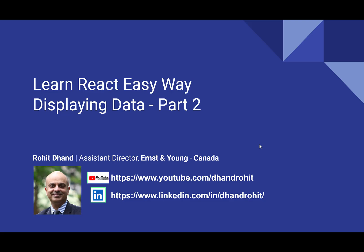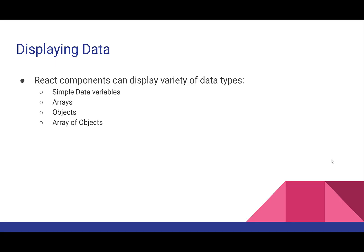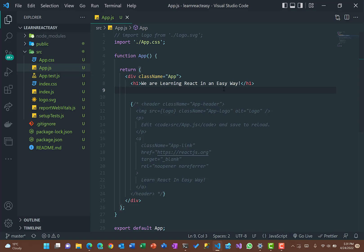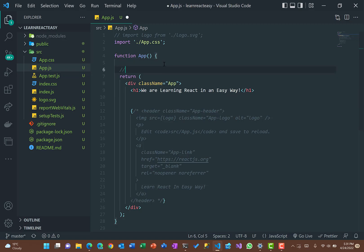This second part focuses on displaying data. Data is very important for any application — even for building websites where React components are used. We're going to work with a variety of data types: simple variables like numeric or string types, arrays, objects, and even arrays of objects. I'll demonstrate how to display all of these multiple data types within React components.